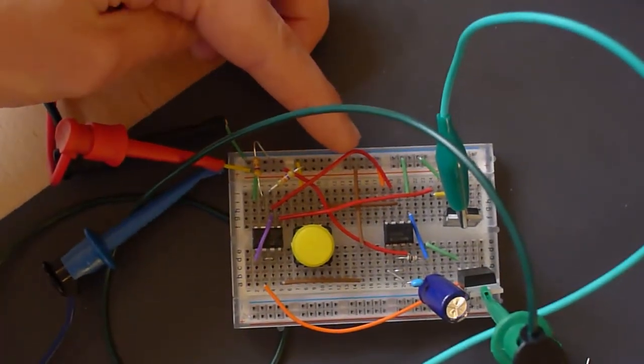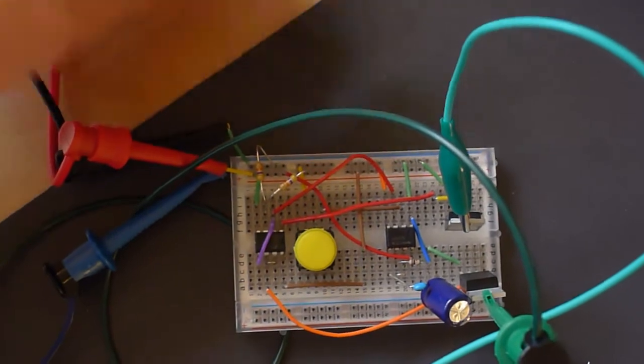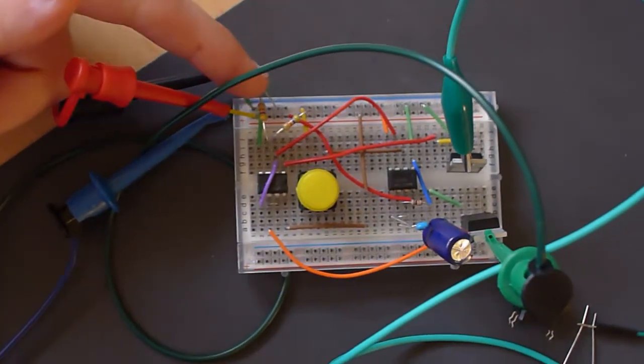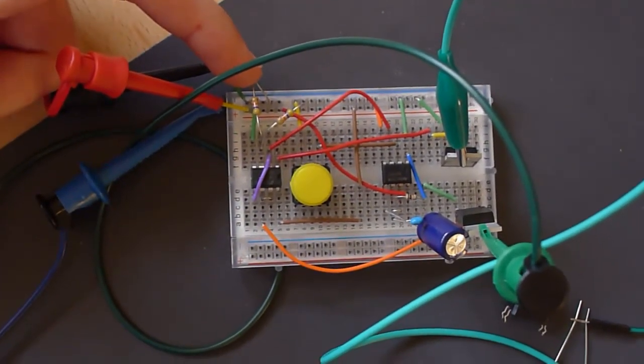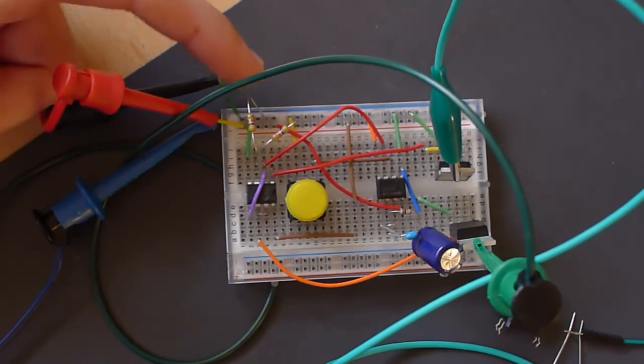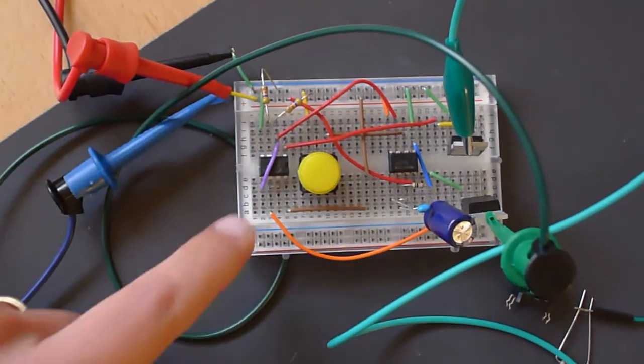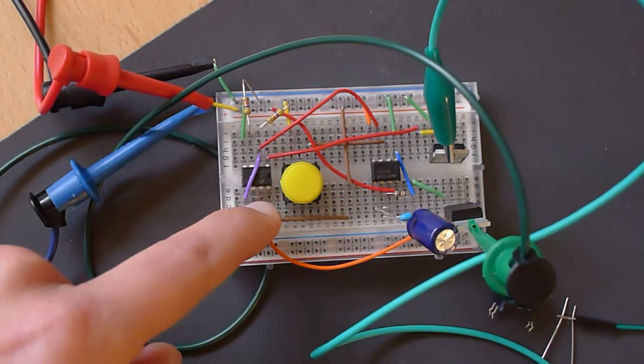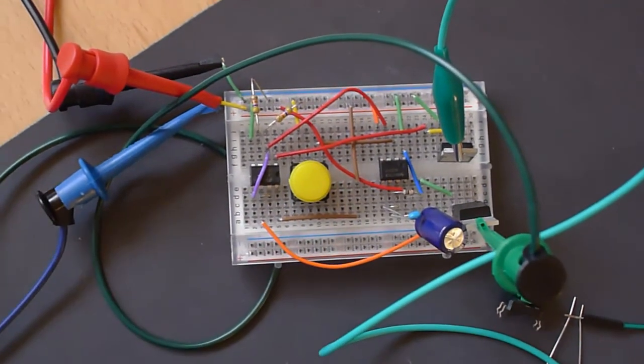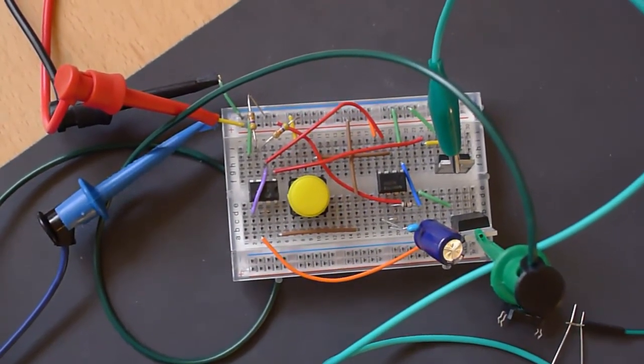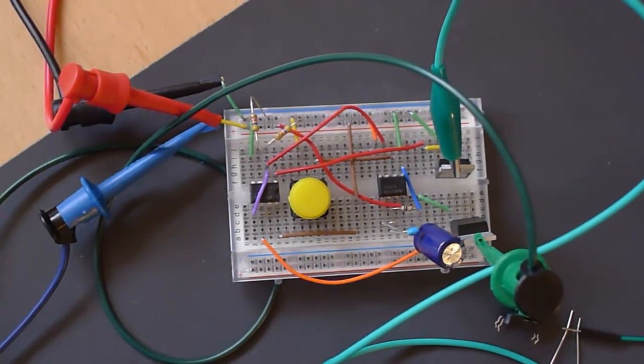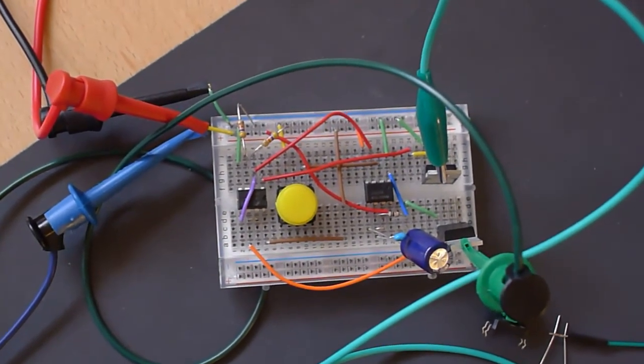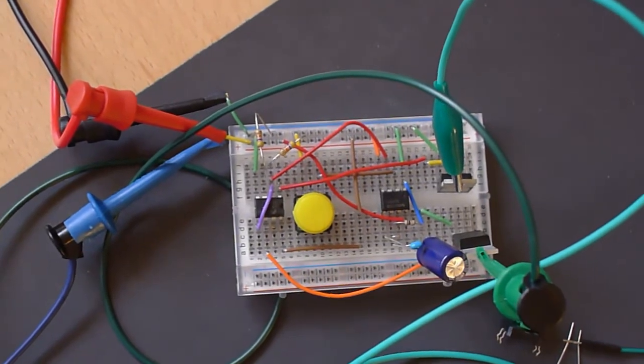And then this is the output wire from the 555 that goes to the dual op amp package here. This side is the comparator with the 50-50 voltage divider in circuit. And then this guy is the voltage follower configuration. You can see the little link there where I'm connecting the output to the inverting input. And then the button,